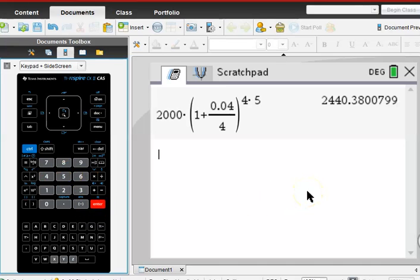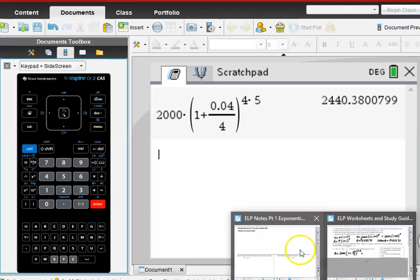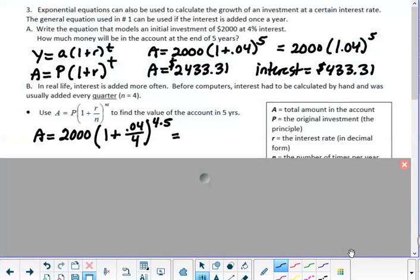And I can say 4 times 5, or I could just put 20 there. So we end up with $2,440.38. So it is a little better. Not a lot better, but a little bit better.